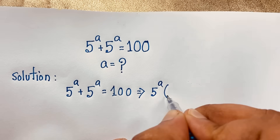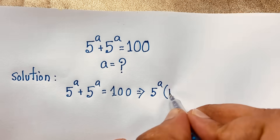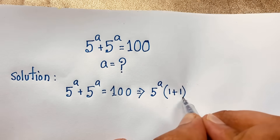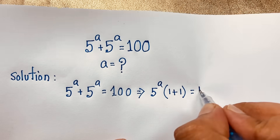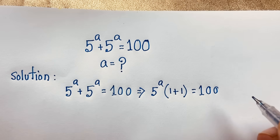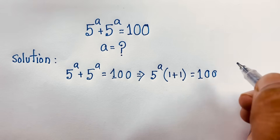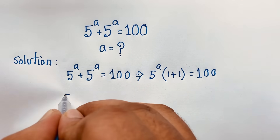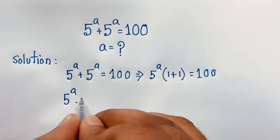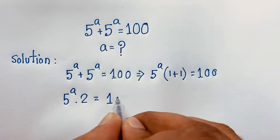So if I take 5 to the power A as common, this divides this — it will be 1. Plus this divides this — it is also 1 — is equal to 100. You can see this expression here: 5 to the power A times 1 plus 1, it will be 2, is equal to 100.